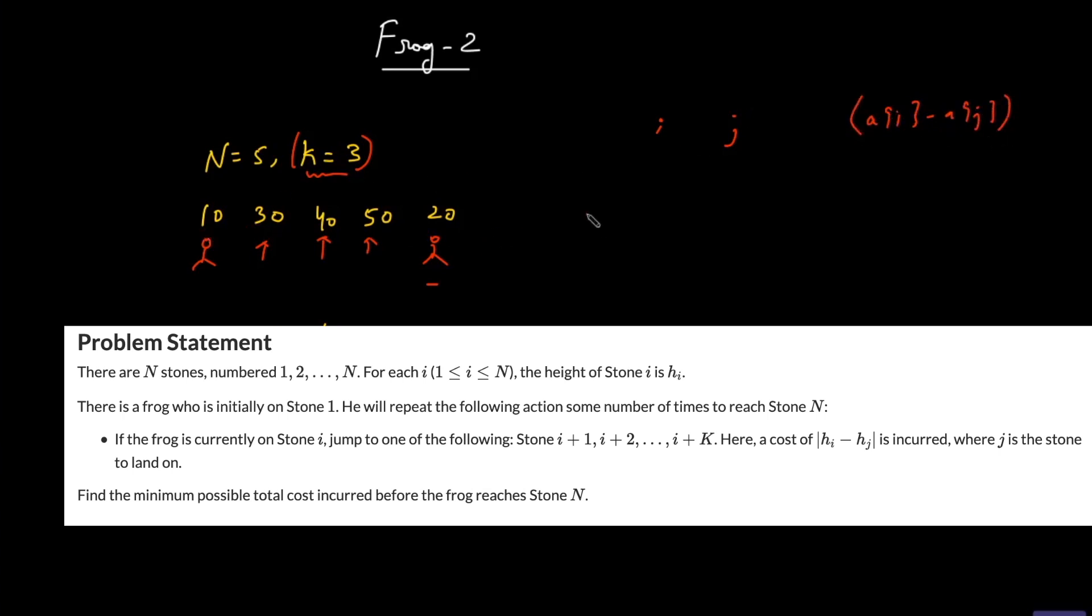So assume you are at 10. If you're moving to 40, then you're moving to 20. The cost incurred over here will be 30, then 20. So the total cost is 50.